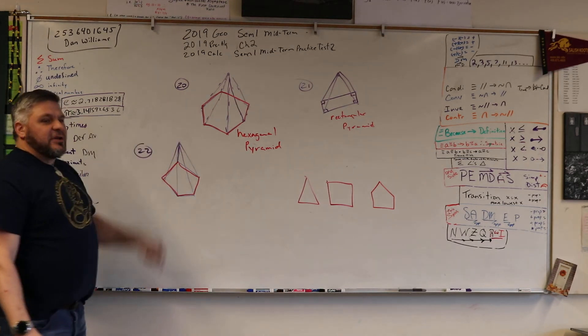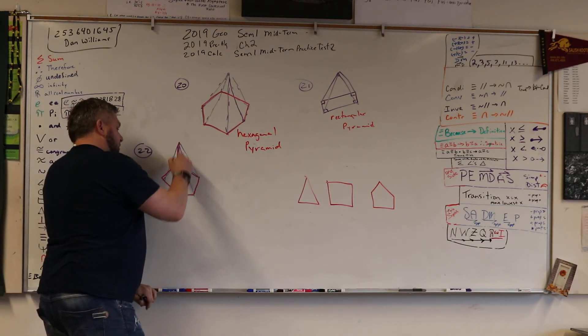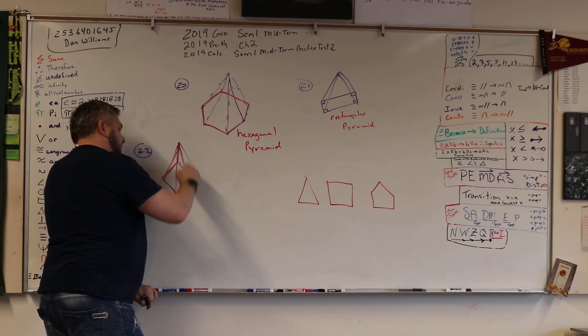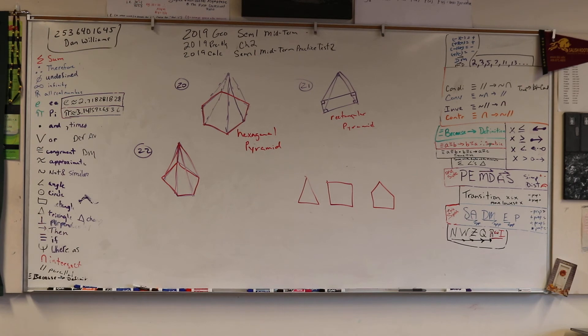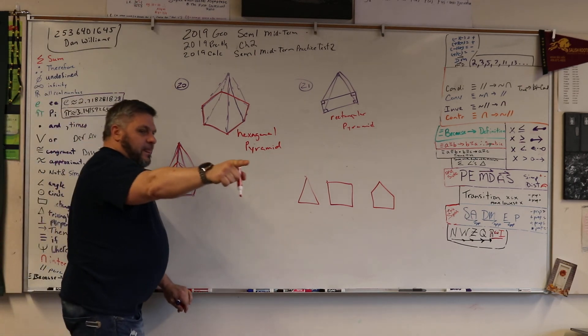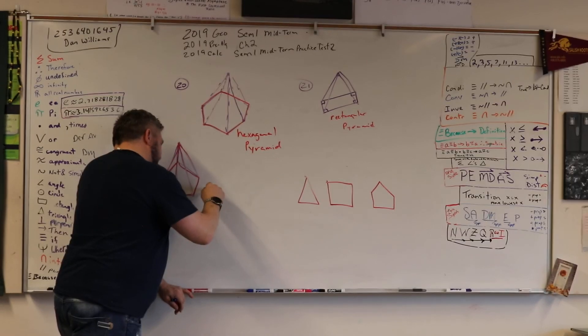So what are we going to call this if it comes to a point? Ty Ty, focus. If it comes to a point, what do we call it? Pyramid. Pyramid. So give it the full name. Rectangular pyramid. Not rectangular. A pentagonal pyramid.